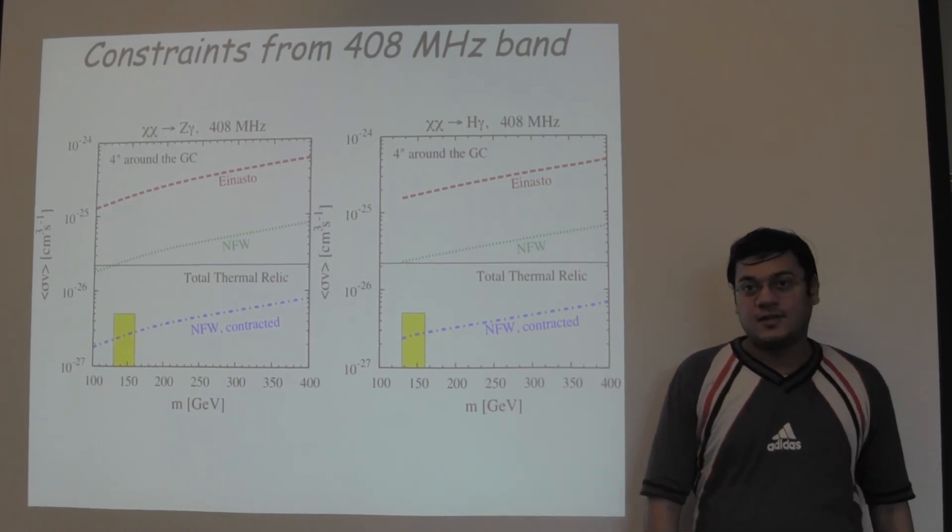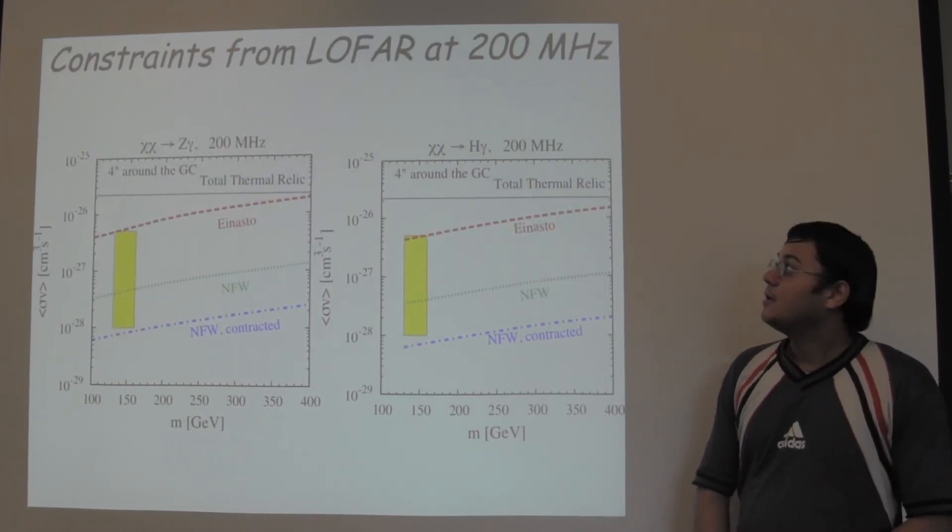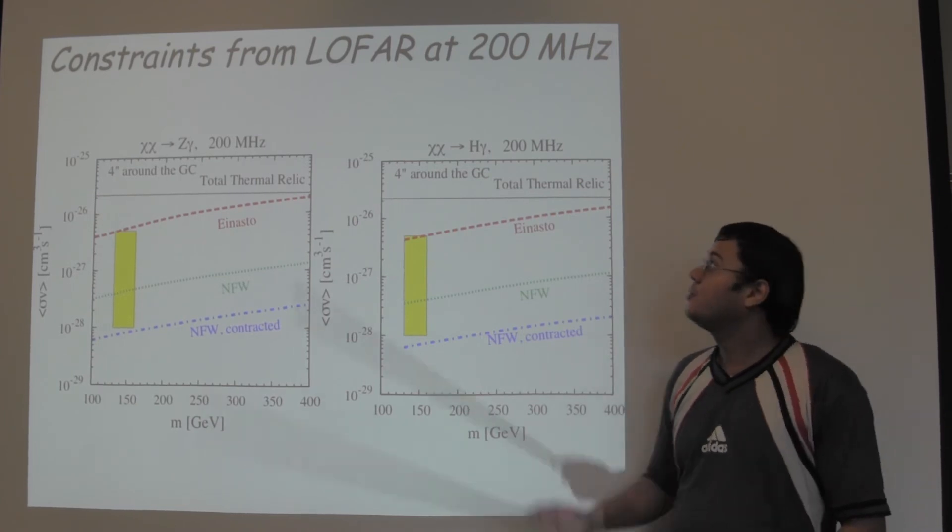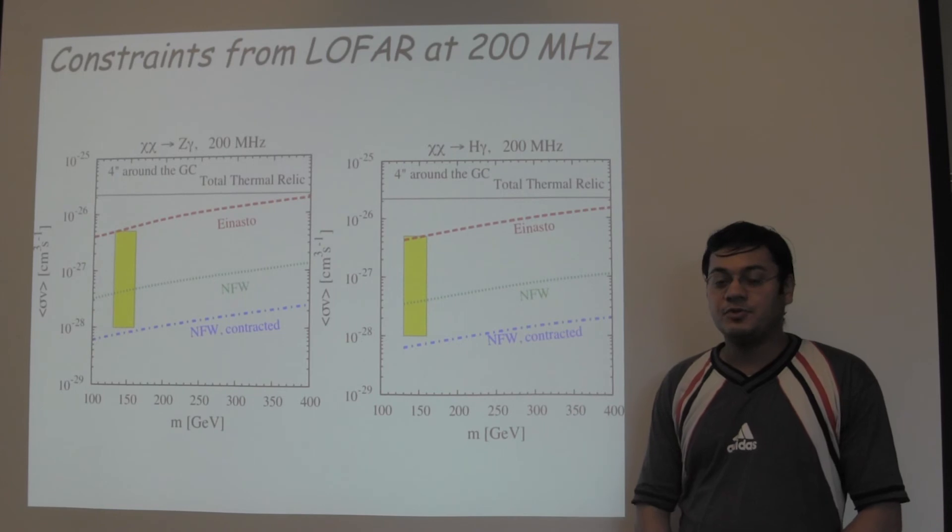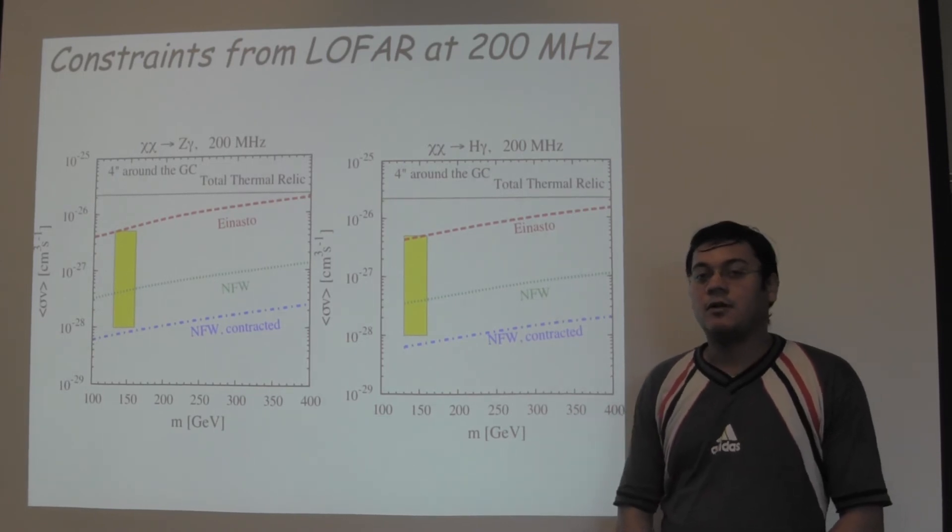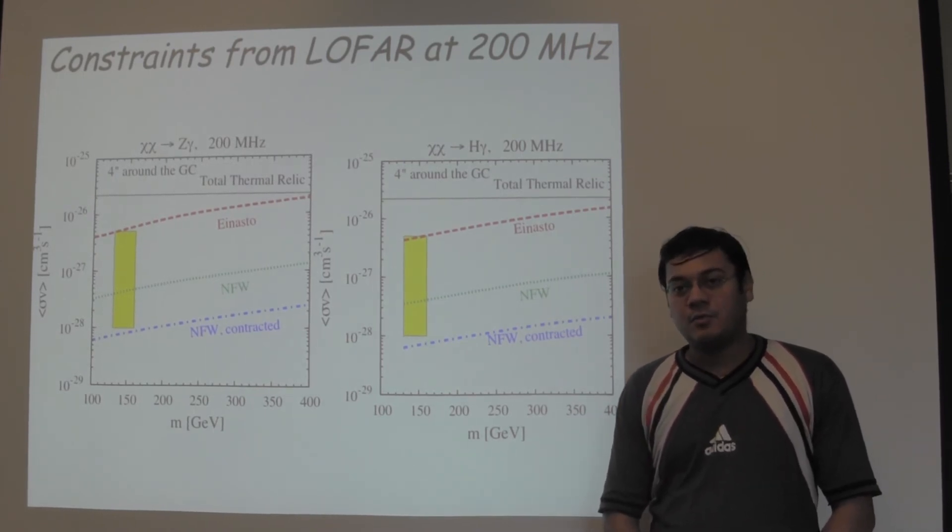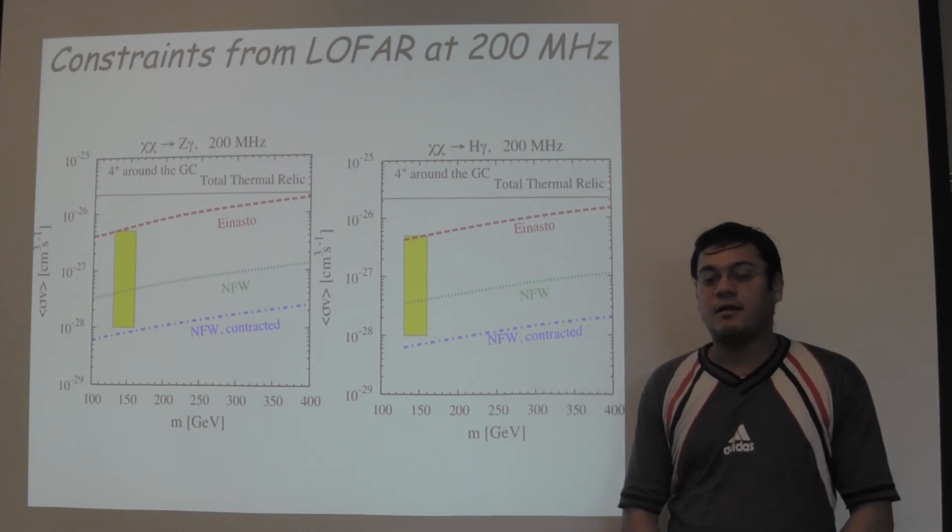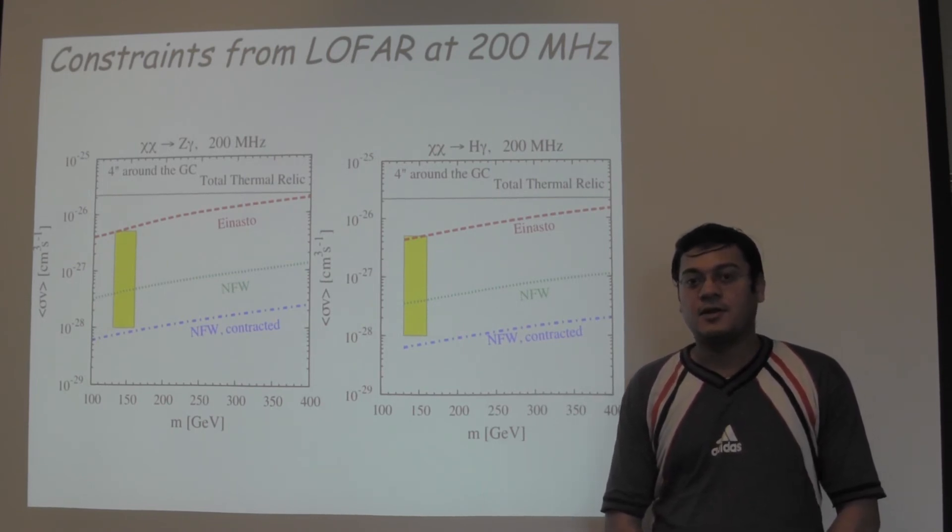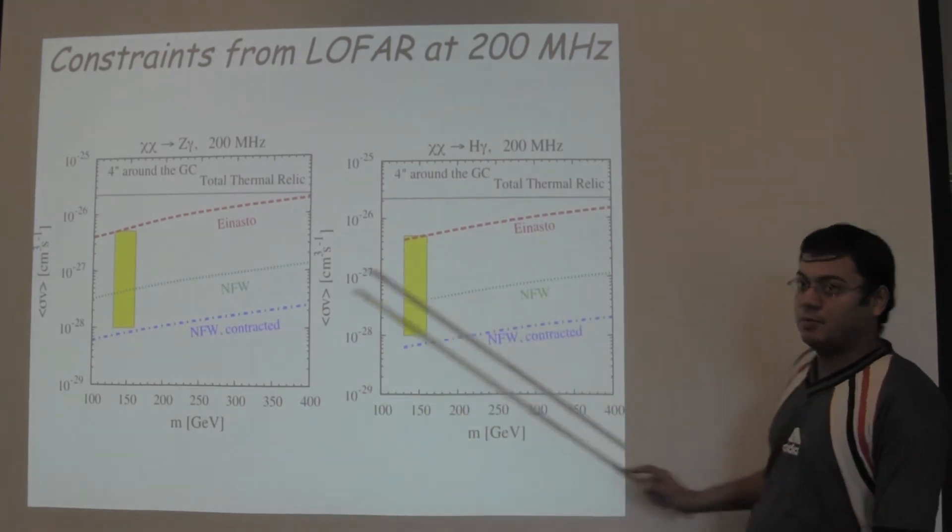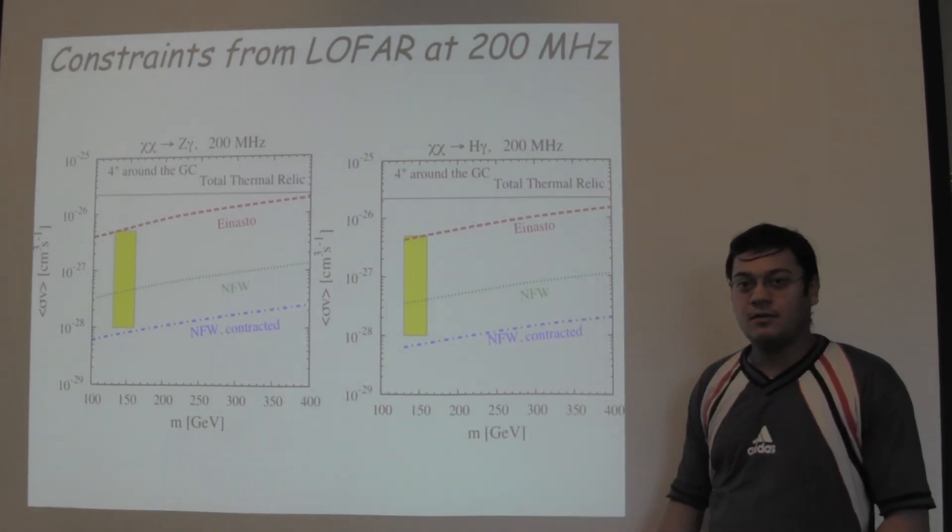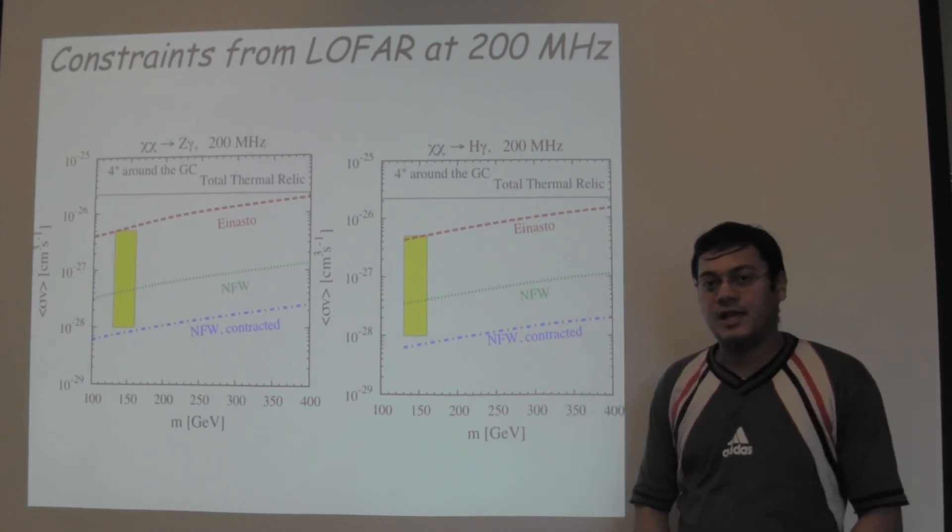Encouraged by this result, we try to see the constraints that can be obtained from LOFAR at 200 MHz. As one can see, due to superior capabilities of LOFAR, LOFAR can confirm or refute the presence of this line by observing the galactic center for about 6 hours. In particular, for both the NFW contracted profiles and the NFW profile, LOFAR can easily confirm or refute the presence of the line.